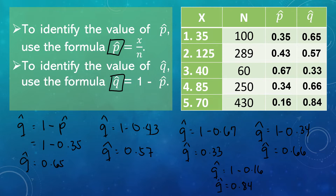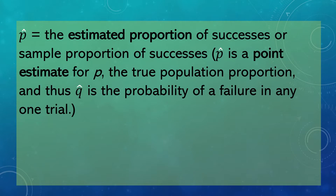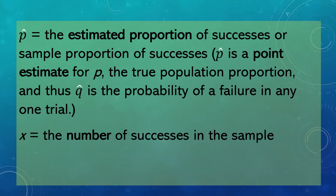We're done identifying the values of P-hat and Q-hat. Now, let's try an example finding the confidence interval estimation for population proportion. P-hat is the estimated proportion of successes, or sample proportion of successes. P-hat is a point estimate for P, the true population proportion, and Q-hat is the probability of failure in any one trial. To find P-hat, we have X — the number of successes in the sample — divided by N, the size of the sample.